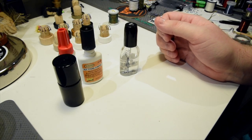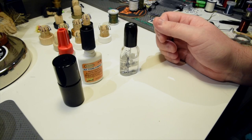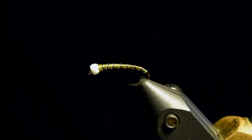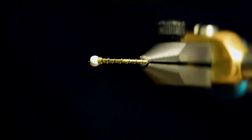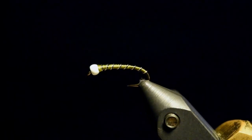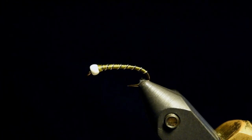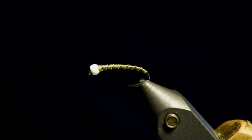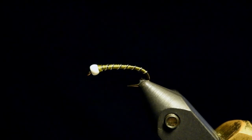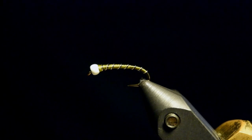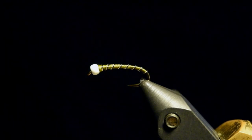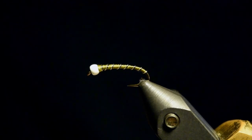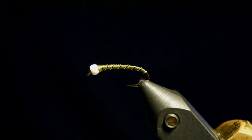Alright, there you have it. Let's head on over to the vise and I'll show you guys what each of these does in action. Well, here we go guys, I've got four identical chronomids. For argument's sake, they're all the same thread, all the same wire. I have done nothing fancy to these, it's literally just a thread body and a double wire rib. Guaranteed to catch you fish, they are going to get them. So anyways, I did this just so we can see how each different coating here affects the thread.